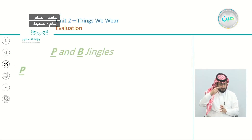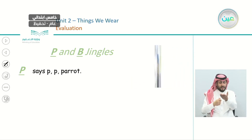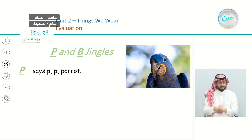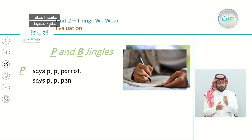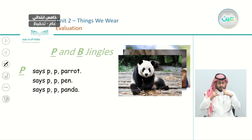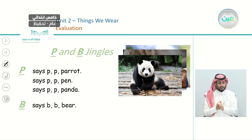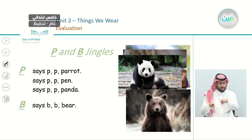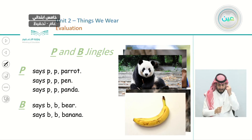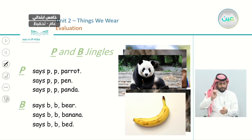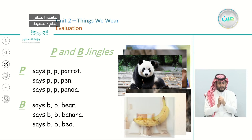Now we have P and B jingles. P says: P, P, parrot — this is a parrot. P says: P, P, pen — a pen you use to write. P says: P, P, panda. Now B: B says: B, B, bear — this is a bear. B says: B, B, banana — the yellow fruit. B says: B, B, bed — where you sleep.